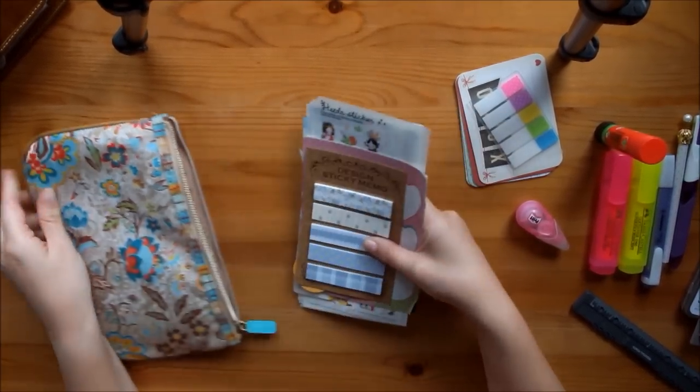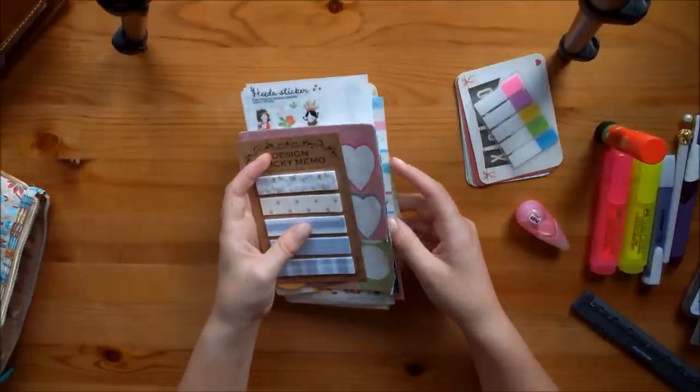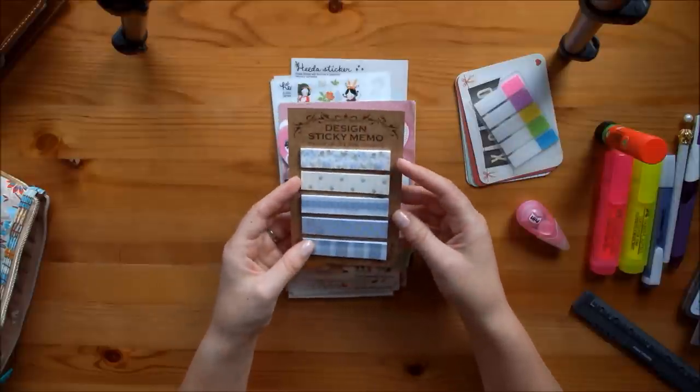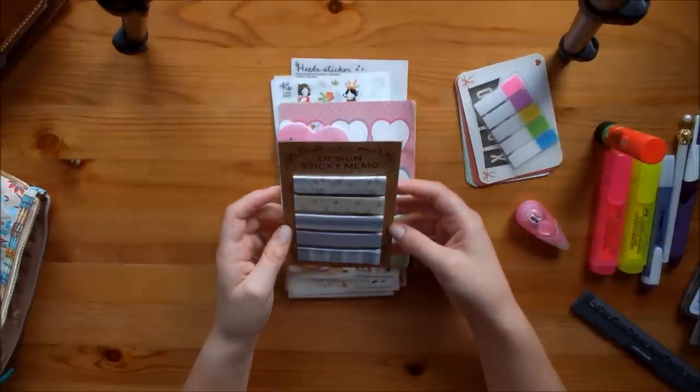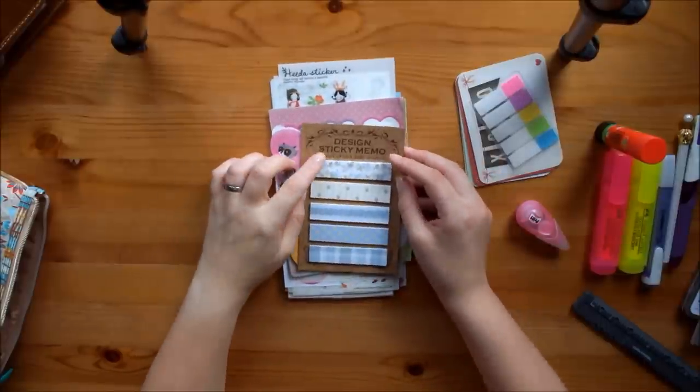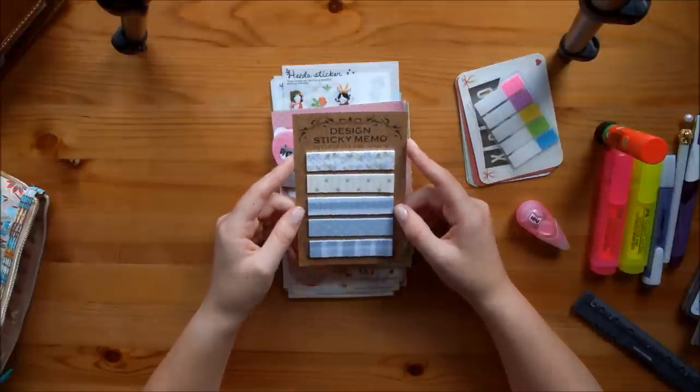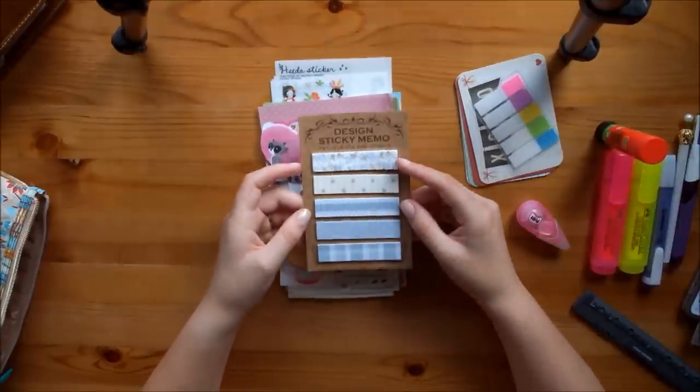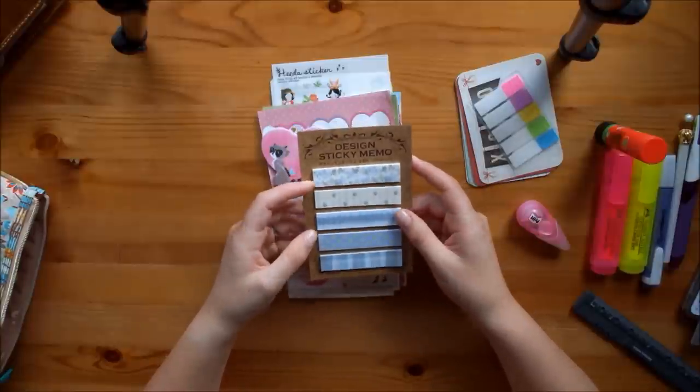And then I have a lot of sticky notes, page flags, labels and stickers in here. So I always keep some page flags. Currently I'm carrying these that I got in Iraq. I think these are from Daiso. I really like the blue colors. I love to use these in my Filofax and also in my Travelers notebook. And once either these are finished or I feel like I really want to change things up a bit, I will just exchange these for different ones.